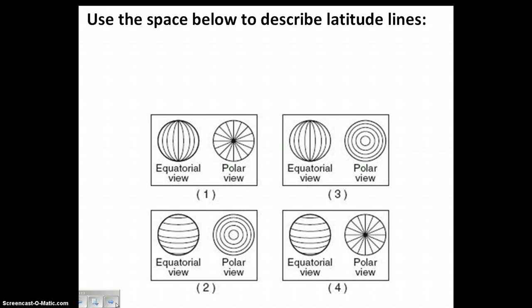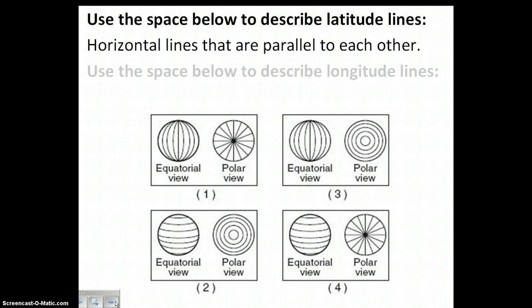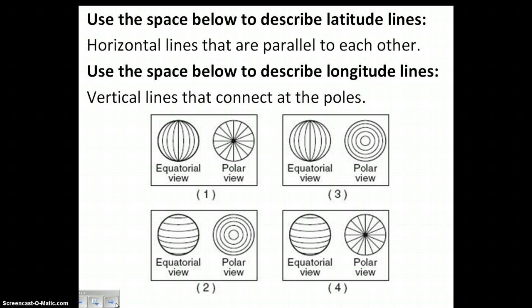So how would you describe latitude? Again, something else to write down. Latitude is horizontal lines that are parallel to one another. Whereas longitude are vertical lines connecting at the poles. Notice they're not parallel. If you look at these lines here for latitude, they are always running parallel. Whereas the lines here that represent longitude aren't necessarily at the same angle. So like this one's not at the same angle as this one.